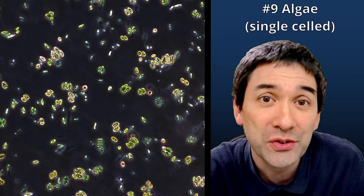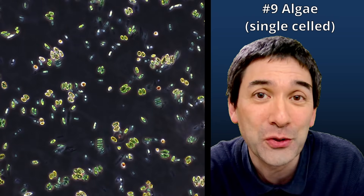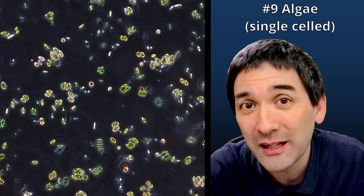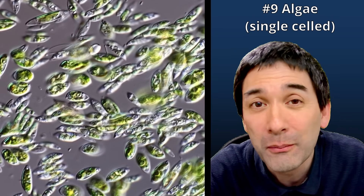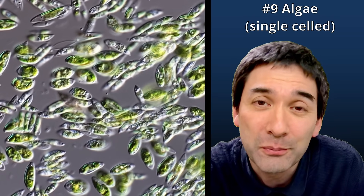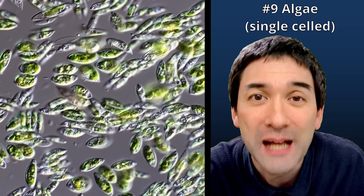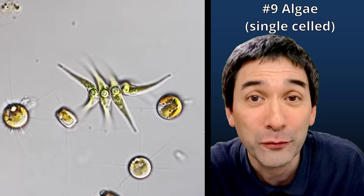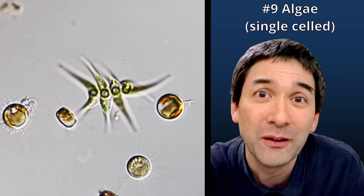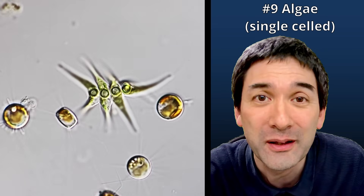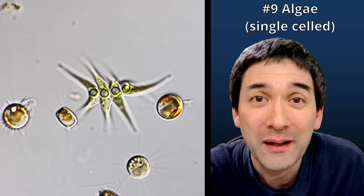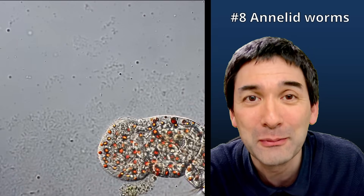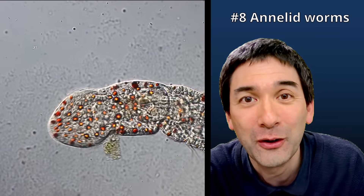Not all algae are diatoms — these are single-celled algae that are not diatoms. They are quite green; green of course is the color of chlorophyll, which is needed to catch sunlight. Just like diatoms, some of them are also able to move around. There are many different shapes here — these are just examples of what you're able to find. Some of the green algae are quite beautiful looking, and they can appear in small tiny colonies as well.